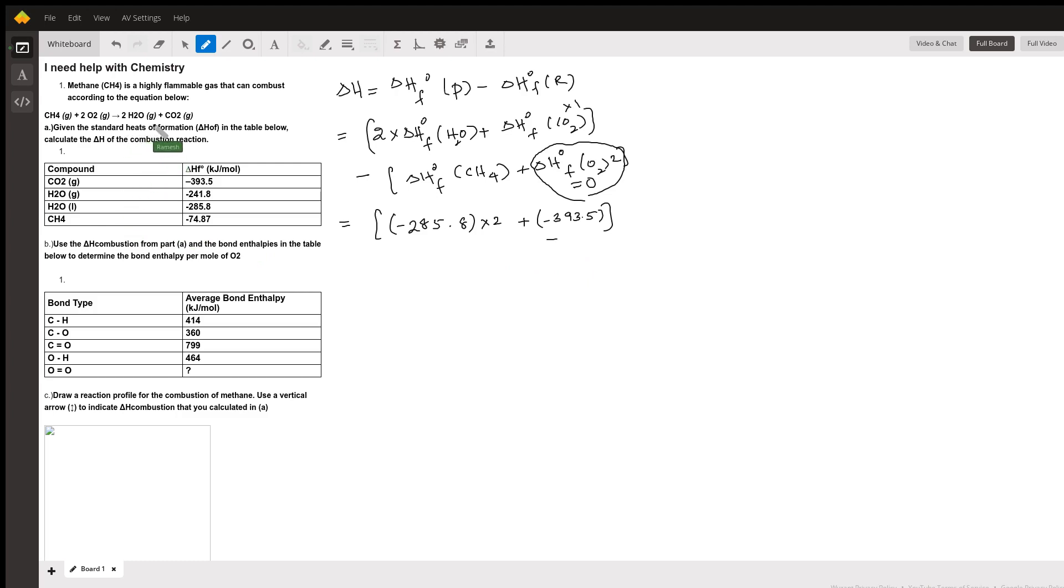So in the equation, it's given gas phase. Make sure you use the value of gas phase, which is minus 241.8. Sorry about that. So since you need the enthalpy of formation of H2O in the gas phase, you are given in the gas phase, you have to use only the value in the gas phase.